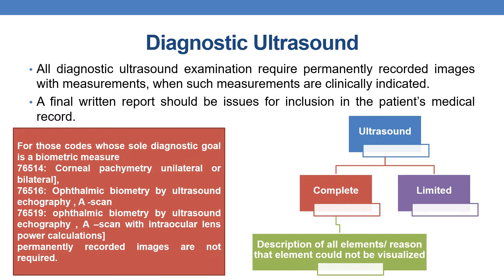Coming to the types of ultrasound, ultrasound is broadly categorized into two types: complete and limited. For a complete ultrasound, description of all elements and/or the reason that an element could not be visualized should be documented. Before considering a complete ultrasound of any anatomical region, we must make a list of all elements whose description is mandatory. In order to code complete ultrasound, the report should contain a description of all elements or the reason why a particular element is absent.